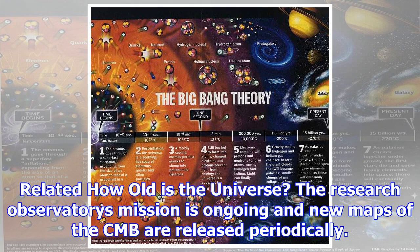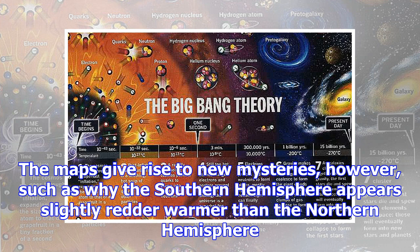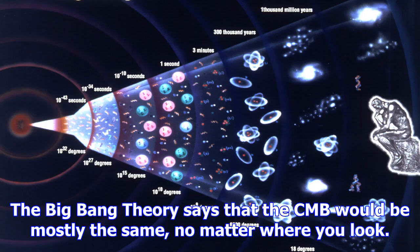Planck's observations, first released in 2013, mapped the background in unprecedented detail and revealed that the universe was older than previously thought – 13.82 billion years old, rather than 13.7 billion years old.